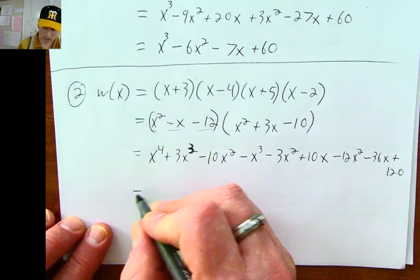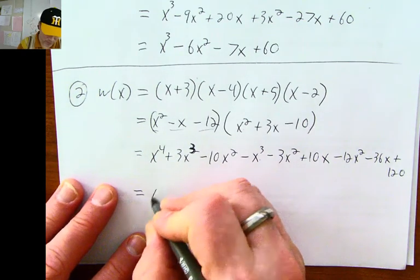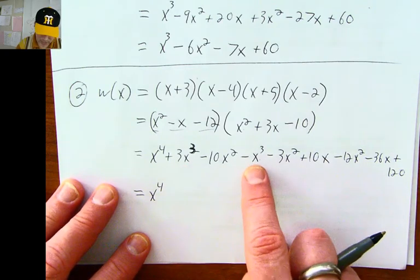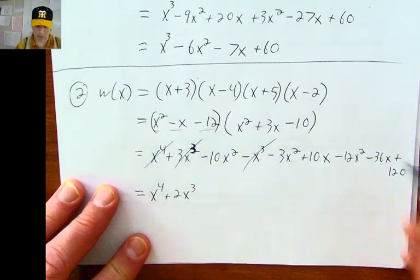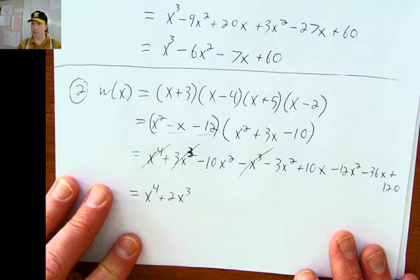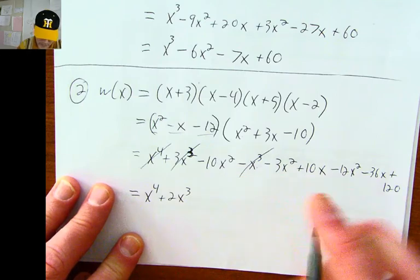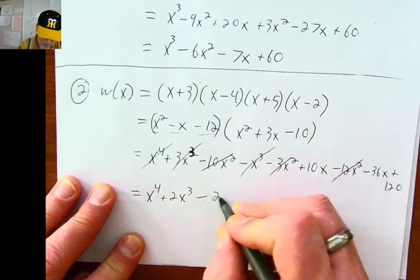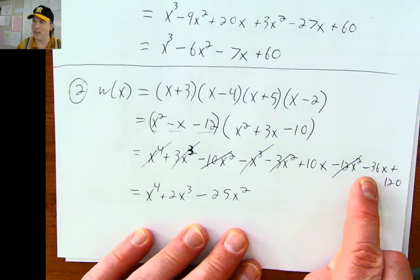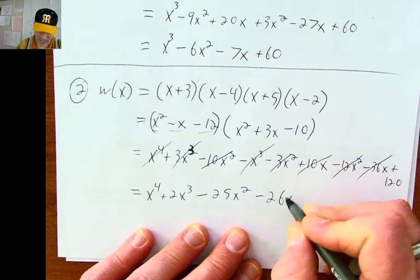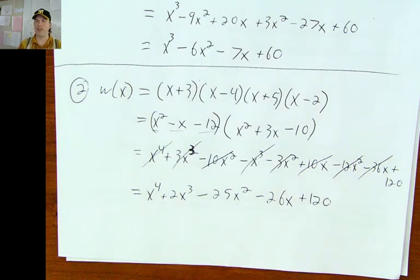To finish it off, there should be like terms everywhere except the first and last terms. x to the 4th stays. For the x cubes: 3x cubed and negative x cubed gives positive 2x cubed. For x squared: negative 10x squared, negative 3x squared, and negative 12x squared are all negative, giving negative 25x squared. For x: positive 10x and negative 36x gives negative 26x. And then plus 120.